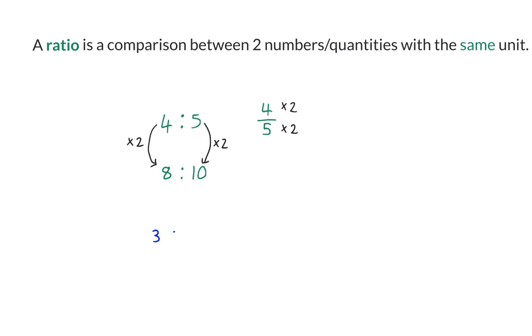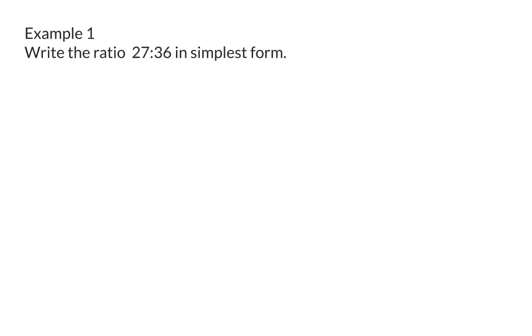Or your ratio may even consist of three parts and then the same rule applies. If the first part doubles, the second part will double and the third part will double. It is useful to always write a ratio in its simplest form because the smaller the values are the easier your calculations will be.